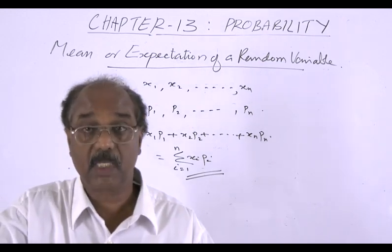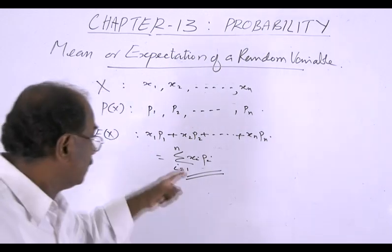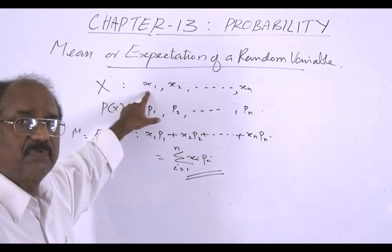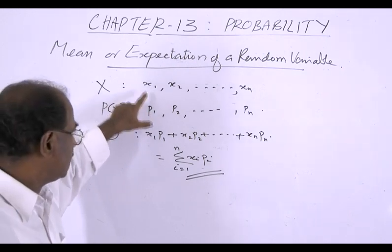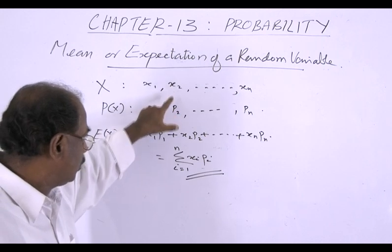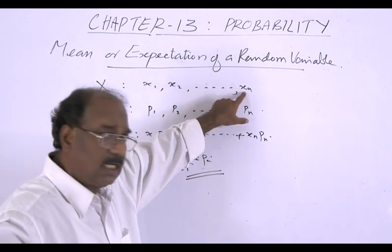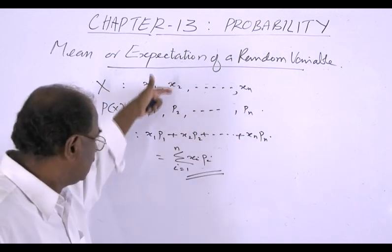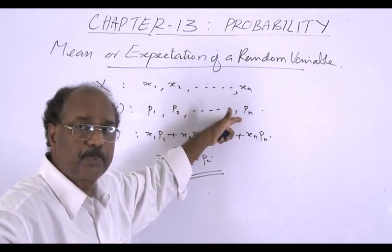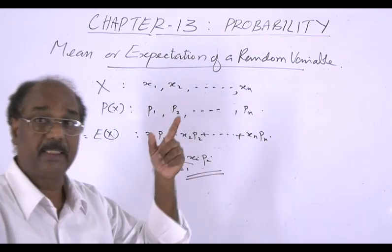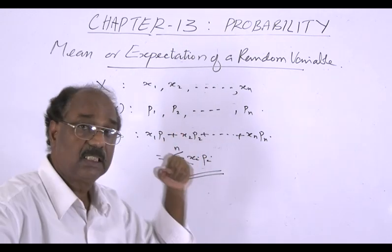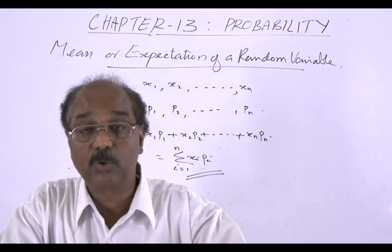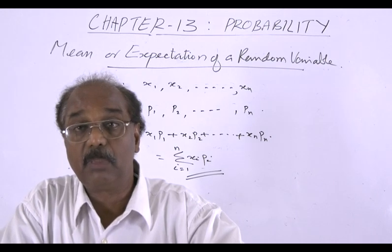Here, we give certain weights to the values of x. The weight for x1 is p1 and that of x2 is p2, and so on. We multiply these values with the probabilities and add, and we get the mean of the random variable x — that is, the expectation of x.